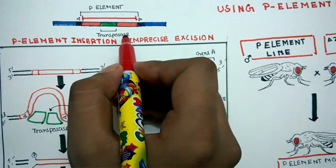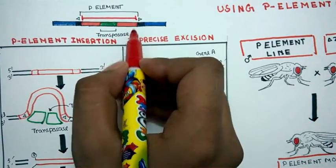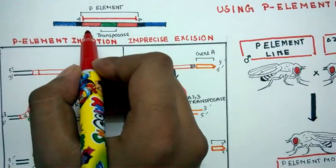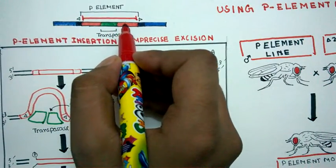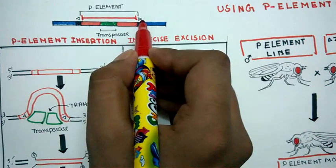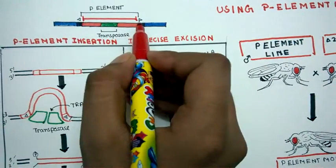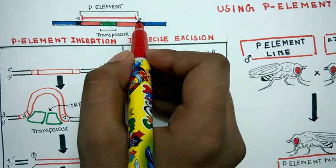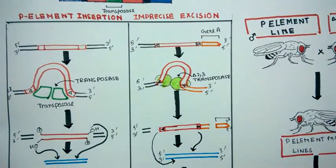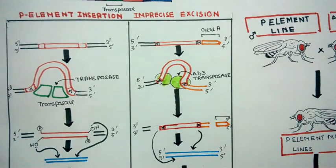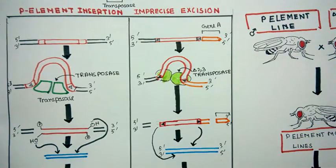And this transposase would actually help this P-element to jump from one location to another location. Another important feature of these P-elements is it has terminal inverted repeats. And if we look into the mechanism, what happens in normal cases, then we could understand how we could use this system in order to create mutagenesis.